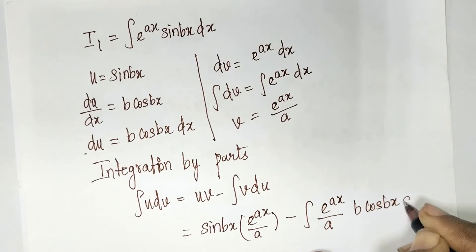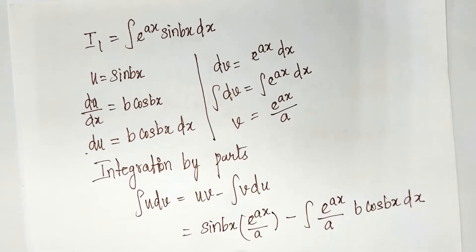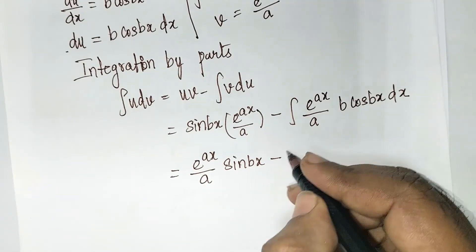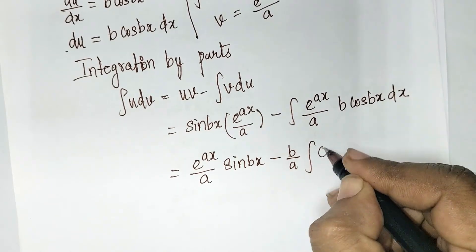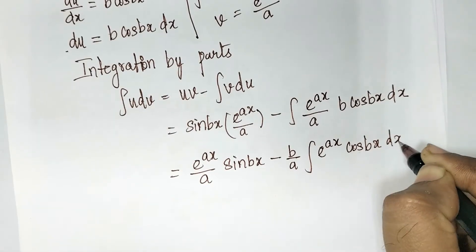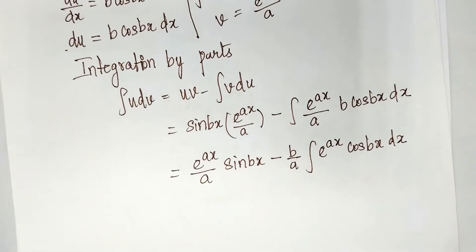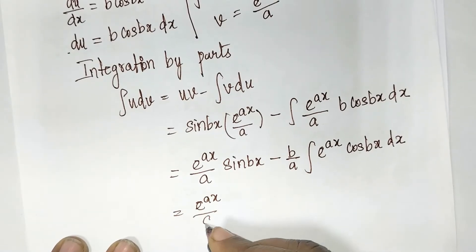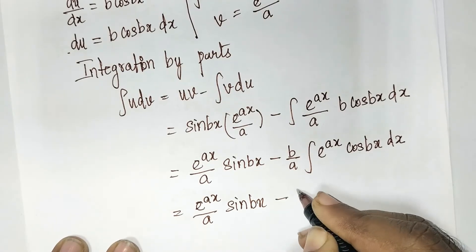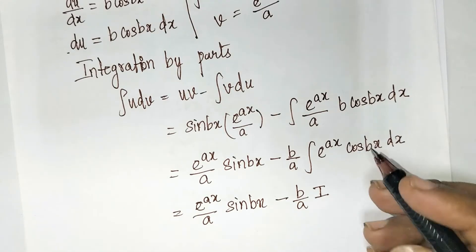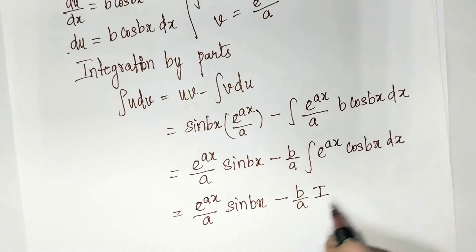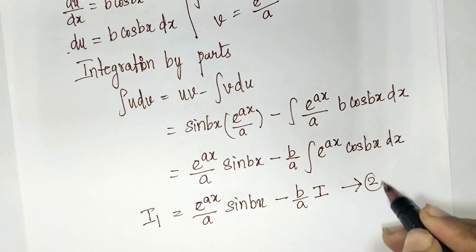Now I solve I₁ = integral of e^(ax) sin(bx) dx using integration by parts again. Applying the same method, I get I₁ = e^(ax)/a · sin(bx) minus (b/a) integral of e^(ax) cos(bx) dx. But the integral of e^(ax) cos(bx) dx is exactly I, so I substitute that back in. This gives us I₁ = e^(ax)/a · sin(bx) - (b/a)·I, which is equation number 2.